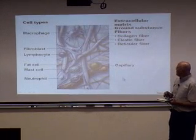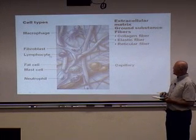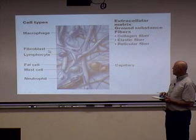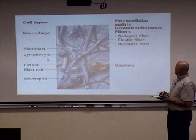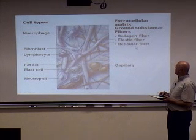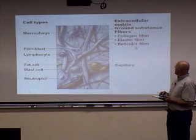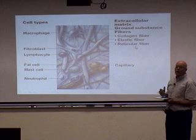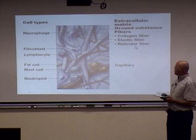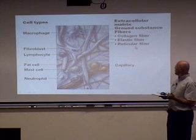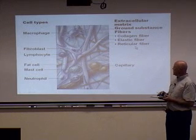Looking at that one more time — what forms connective tissue? The three elements are: cells, including fibroblasts, macrophages, and lymphocytes; fibers, including collagen, elastic, and reticular fibers; and the ground substance, the extracellular matrix in the background. So connective tissue is formed of the extracellular matrix, fibers, and cells.